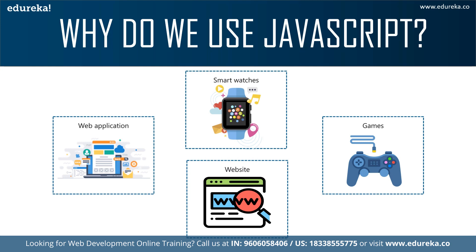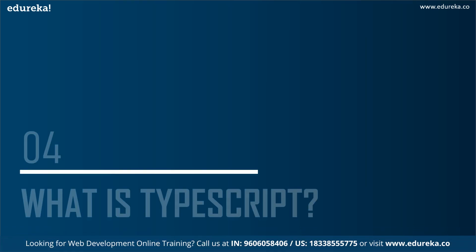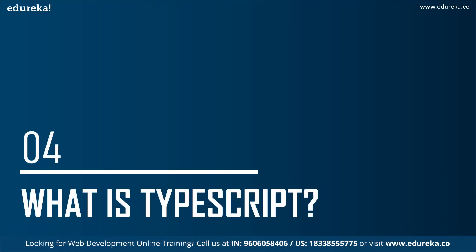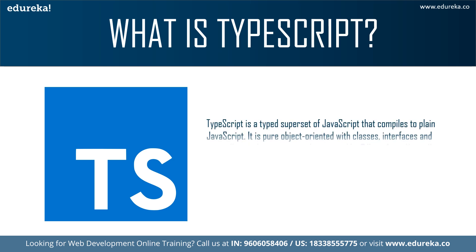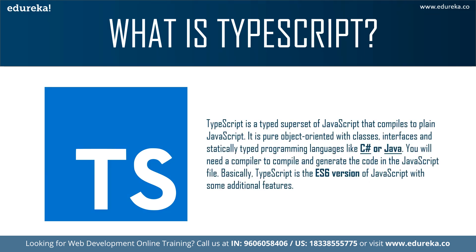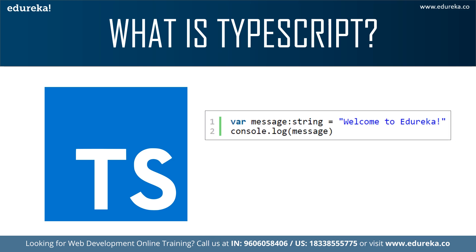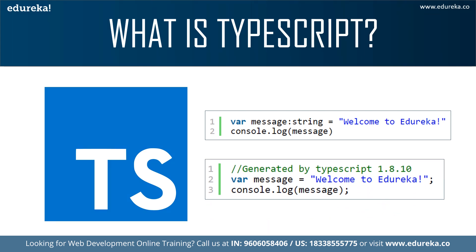Now let's see what TypeScript is. TypeScript is an open-source programming language that lets you write JavaScript the way you want to. It is a superset of JavaScript that compiles into plain JavaScript, and is purely object-oriented with classes and interfaces. It helps programmers write object-oriented programs compiled to JavaScript on both the server side and client side. For example, you can take a variable, specify the data type as string, write a value like 'welcome to Edureka', and then print that message.